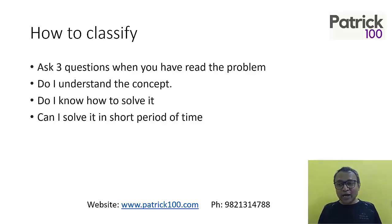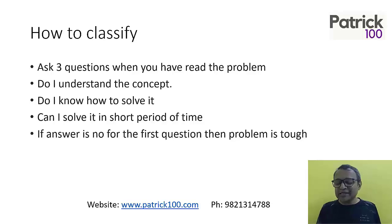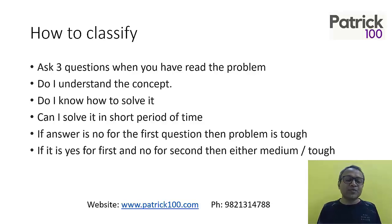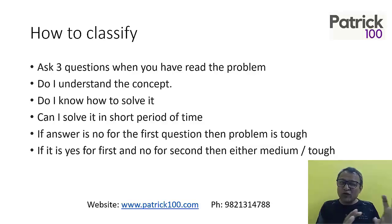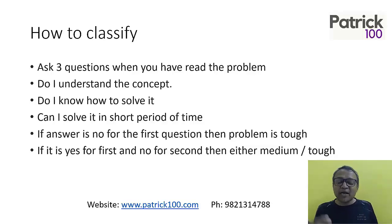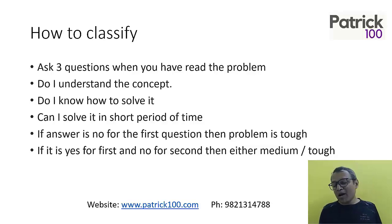Based on the yes/no answers to those three questions, you decide the classification. If the answer to the first question is no — you don't know the concept — mark it as tough and leave it. If it's yes for the first but no for the second — you know the concept but haven't seen this type of question — then based on how the question is framed, decide medium or tough. If you feel that on a second look you might crack it, mark it medium; otherwise, mark it tough.